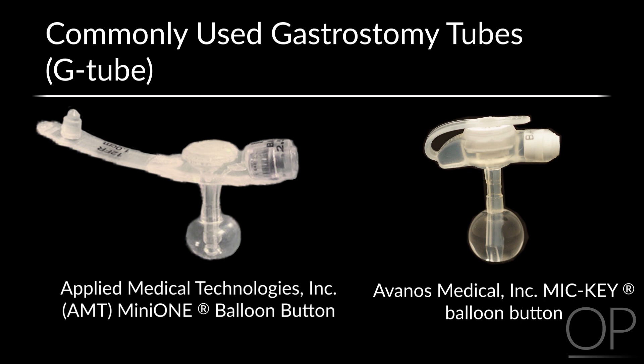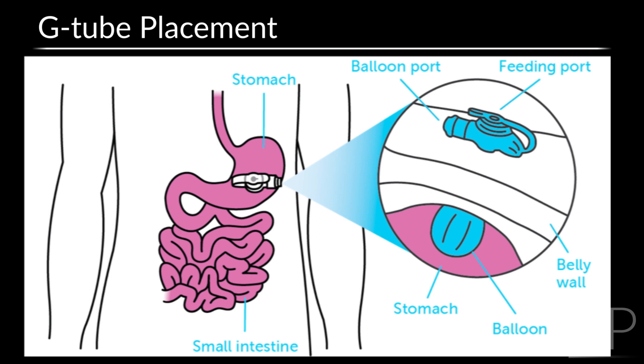Despite some design differences, the purpose, care, and function of these G-tubes are very similar. G-tubes are placed into the child's stomach through an opening called a stoma. It's used when the child is unable to tolerate feeds or medicines by mouth.